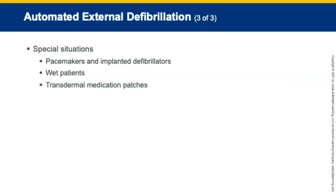If pediatric pads are not available, use the AED with adult size pads with anterior-posterior placement. For patients with pacemakers or implanted defibrillators, place electrodes at least one inch away from the device. For wet patients or patients in water, pull them out and dry the skin before attaching the AED pads. Remove transdermal medication patches and wipe the skin to remove any residue prior to attaching the AED pads.